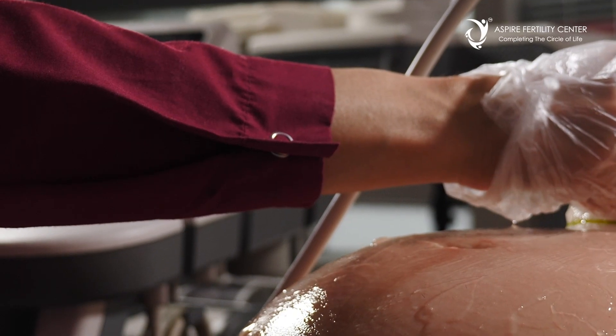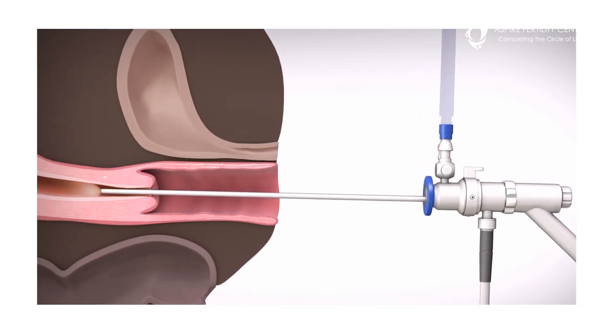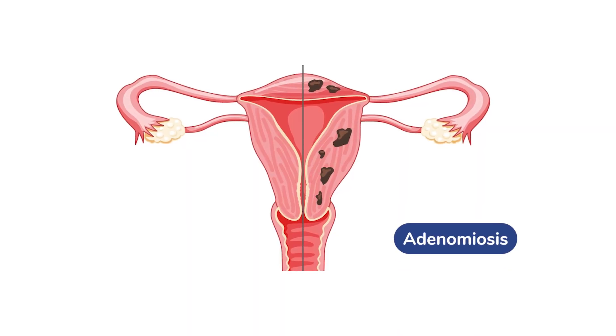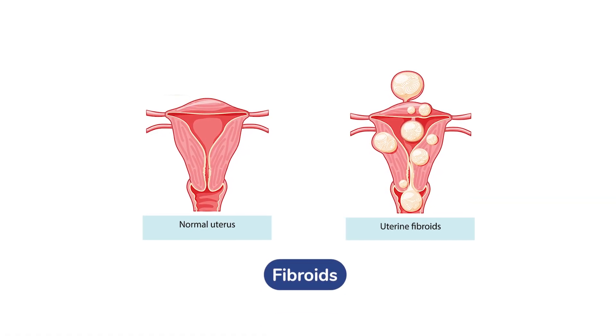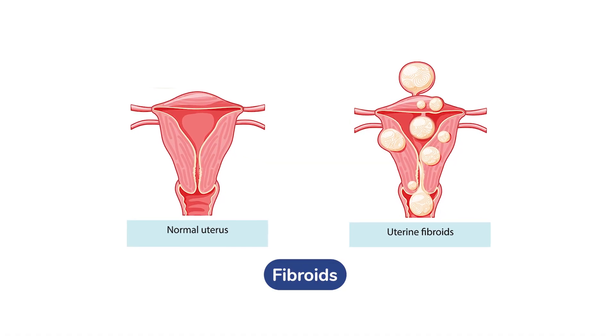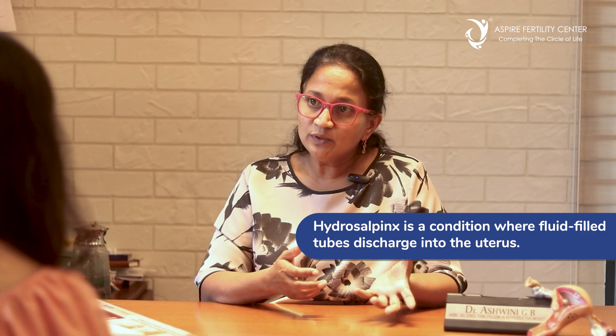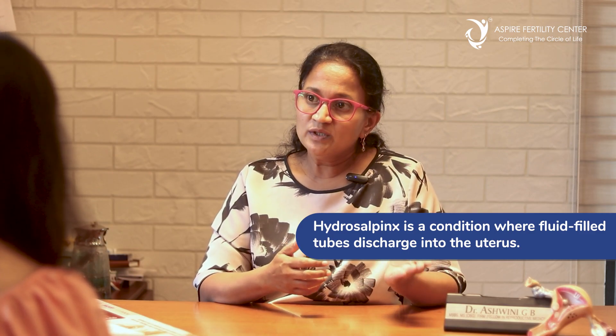Miscarriage rates are lower in women who conceive with a PGT-A tested embryo rather than an untested embryo. The other factors relate to the uterus. Situations that may be missed on conventional ultrasound but can be picked up by a 3D scan or hysteroscopy include small endometrial polyps, an adenomyotic uterus, or fibroids distorting the shape of the uterus.